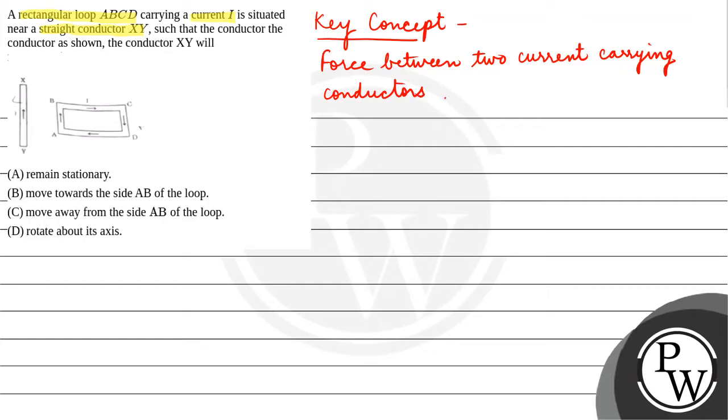If you have two conductors, one with current I1 and the other with I2, and the distance D, then force will be mu naught I1 I2 upon 2 pi D.